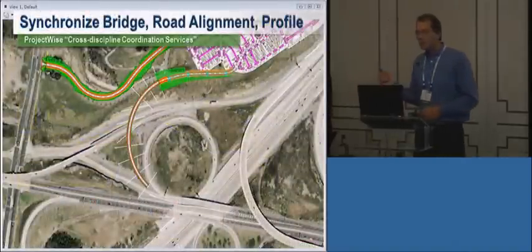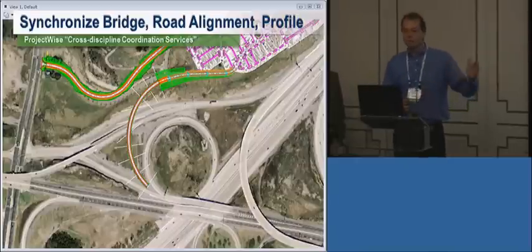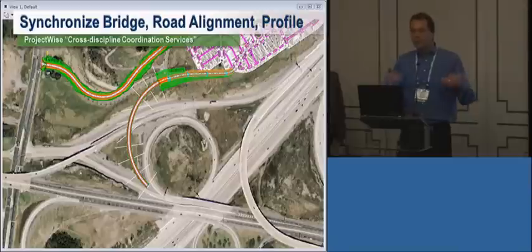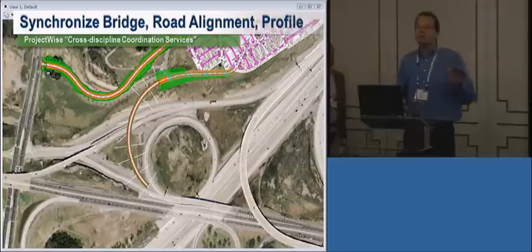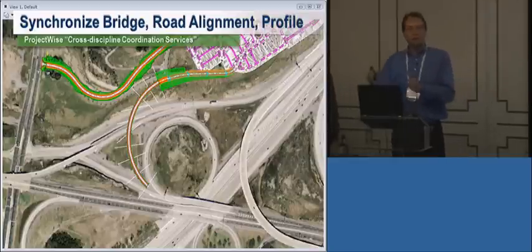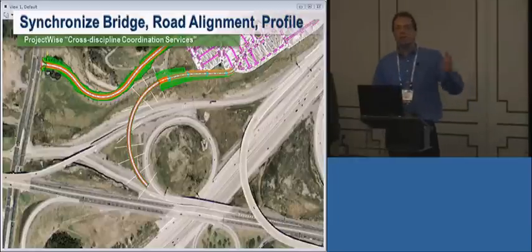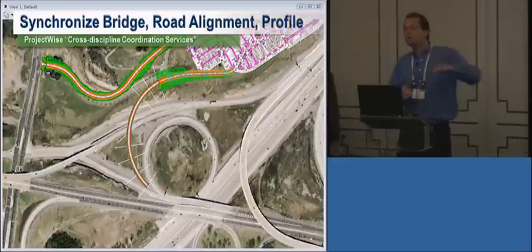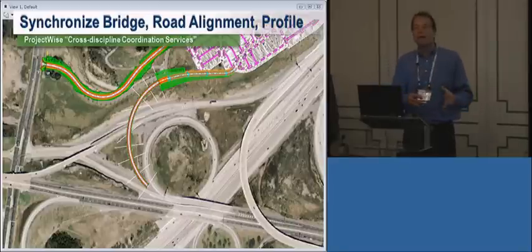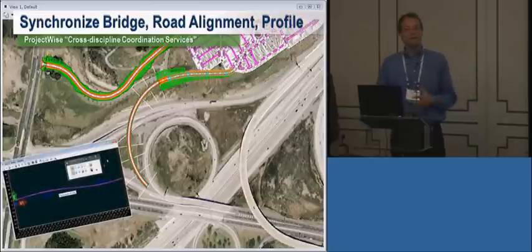When the civil engineer is done with the road design, one of the things they'll do is hand it off to the bridge engineer. This is where Cross-Discipline Coordination Services come in — as the civil engineer who designed the roads and set the bridge alignment, I can use coordination services to communicate to the bridge engineer: here's where the bridge needs to go, here's the terrain model, here's the super-elevation on that curve. The bridge engineer can then go ahead and design the structure.